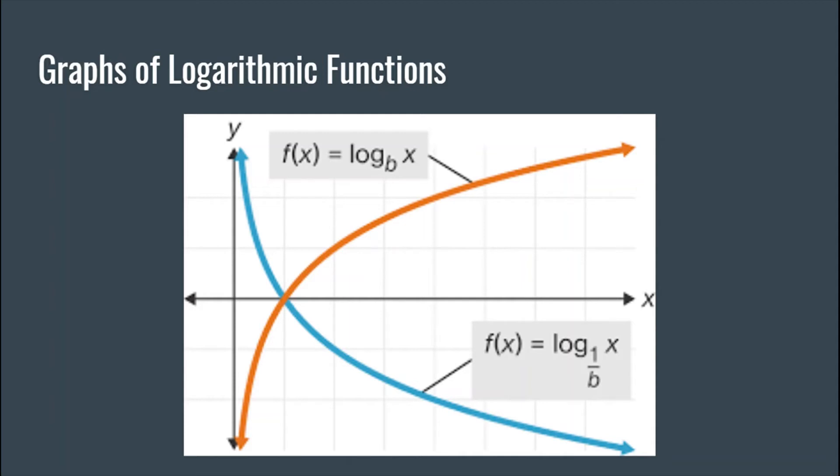The way inverses work is the domain and range are switched. The domain of the exponential function will be the range of the logarithmic function, and the range of the exponential function will be the domain of the logarithmic function.